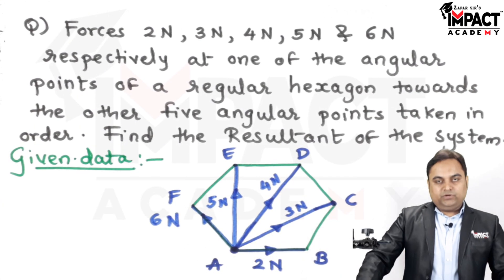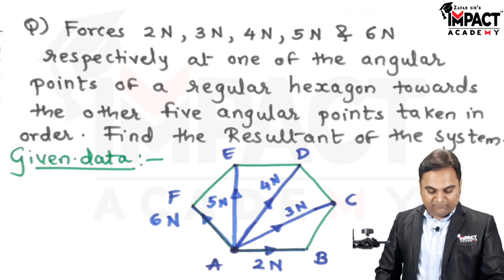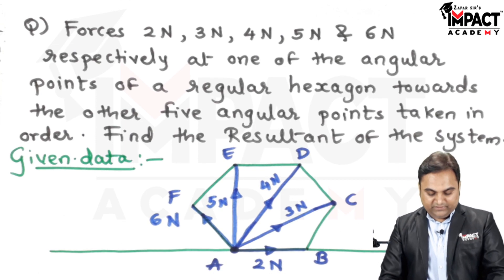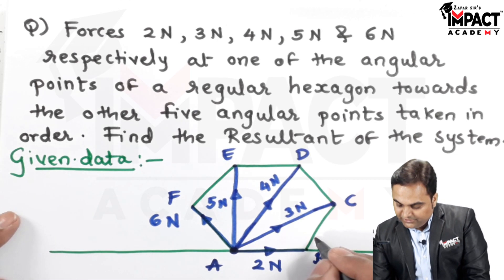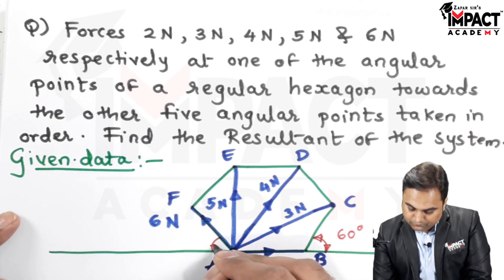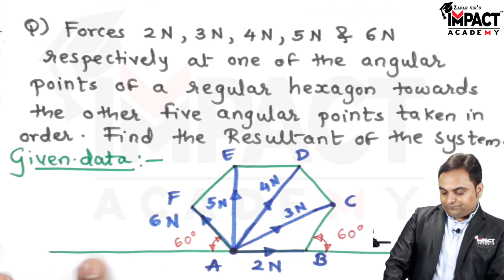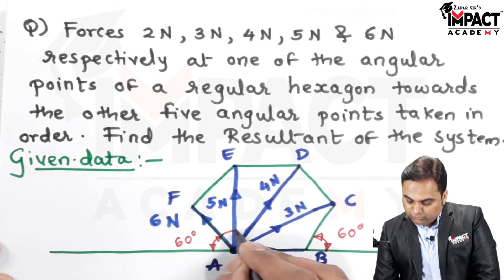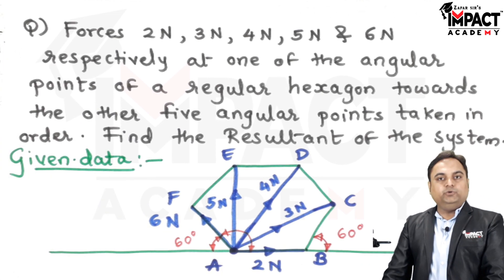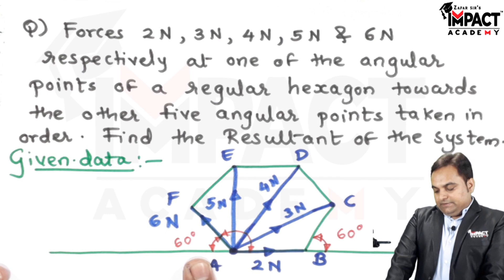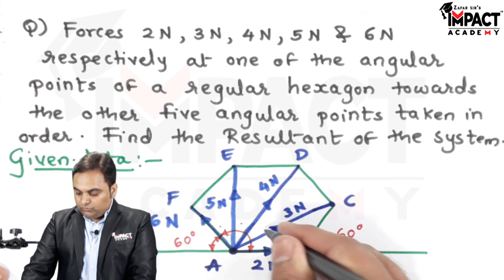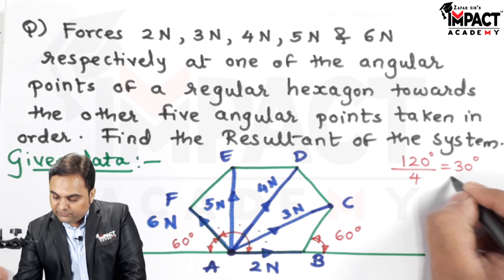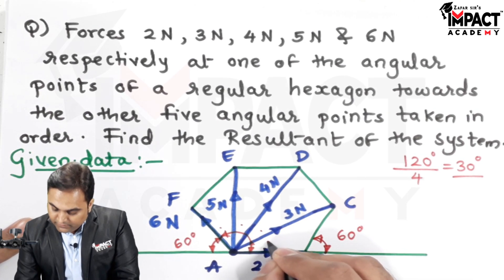Now I'll find the angle between all the forces. Since we have a horizontal line, the angle made by the sides of the hexagon is 60 degrees with respect to the horizontal. The remaining total angle would be 120 degrees, that is 180 minus 60. Since we have four angles in between, 120 divided by 4 gives 30 degrees. So the angle between each force is 30 degrees.